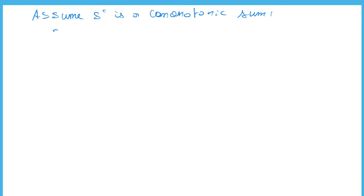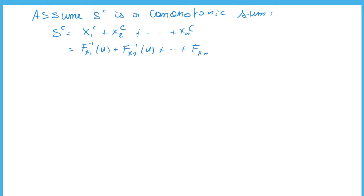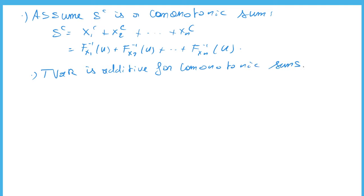Assume now that we have a comonotonic sum S^c, given by X_1^c plus X_2^c all the way to X_n^c, where all these variables are comonotonic random variables. This means we can write this as F_{X_1}^{-1}(U) plus F_{X_2}^{-1}(U) all the way to F_{X_n}^{-1}(U), as learned in the chapter on comonotonicity. At the end of chapter 6, we showed that the tail value at risk is additive for comonotonic sums: the tail value at risk of S^c equals the sum of the marginal tail values at risk of each X_i.